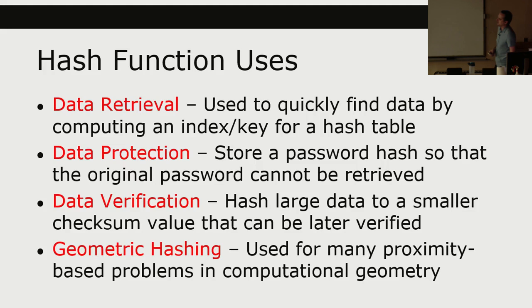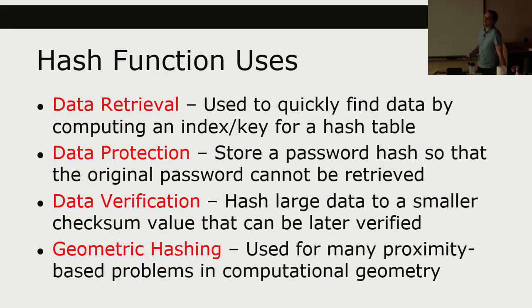Another use is called geometric hashing, and this is what you would want to do on assignment two. It is used for many proximity-based problems in computational geometry. In your case for assignment two, you would want to take an XY location and turn that into an integer index into an array. In general, you'd want to take some N-dimensional geometric data and reduce it to a one-dimensional index into an array.